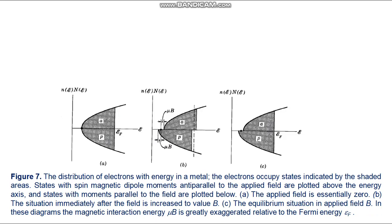In figure 7a, we plot the energy distribution of electrons in a metal — states with spin magnetic dipole moments anti-parallel to the field plotted above the energy axis, and parallel moments plotted below. When B is increased, at first all electron energies shift: rising by μ·B for anti-parallel moments and dropping by μ·B for parallel moments (figure 7b). Some electrons then make transitions from the higher-energy anti-parallel states to the lower-energy parallel states, leading to the equilibrium minimum-energy situation shown in figure 7c.